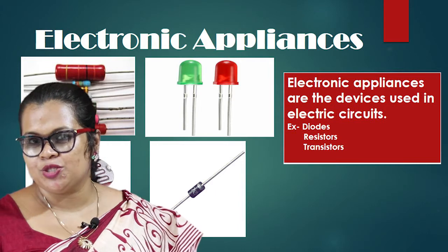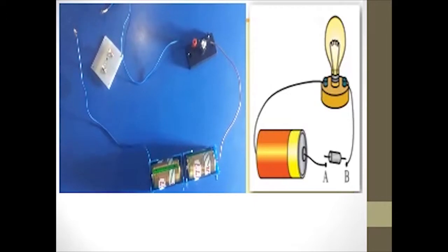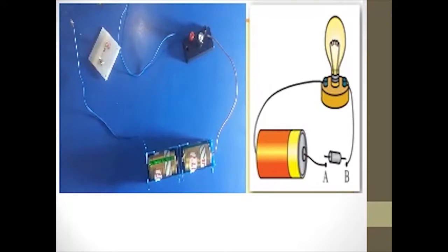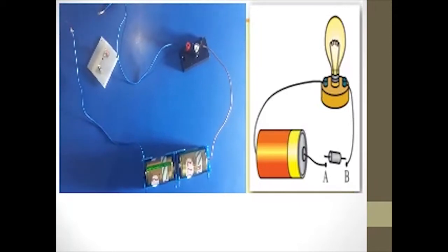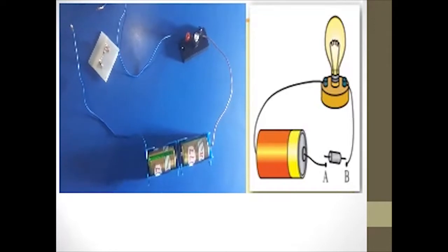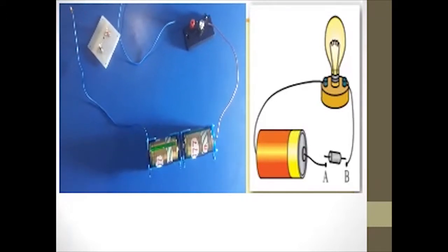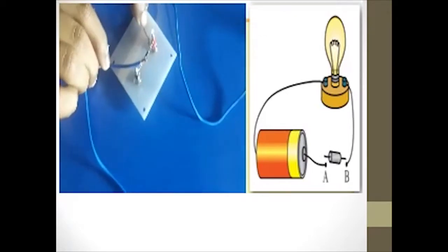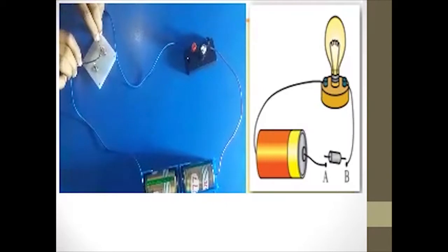Now you are going to see an experiment to observe the action of the diode. A rectifier diode allows current flow only along one direction. Current flows from the positive terminal to the negative terminal along a rectifier diode. This experiment shows us the way that current flows through a rectifier diode only along one direction. A dry cell, a bulb and a diode are connected to this circuit. When the diode is fixed to the circuit correctly, the bulb lights. Here the positive terminal of the diode is connected to the positive terminal of the dry cell.